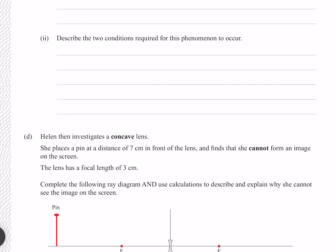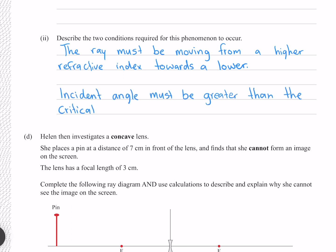Describe the two conditions required for this phenomenon to occur. The first condition is that if we imagine our boundary and our normal line, in order for total internal reflection to occur, our ray must be bending away from the normal. This will only occur if we're moving from a high refractive index to a lower. The ray must be moving from a high refractive index towards a lower. The second condition is that the incident angle must be greater than the critical angle.